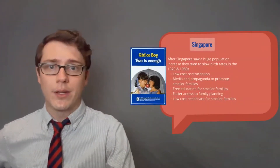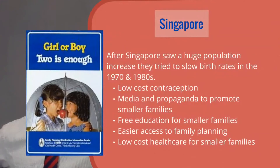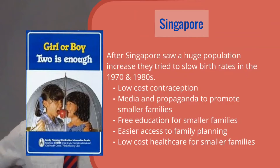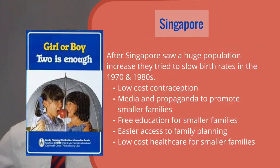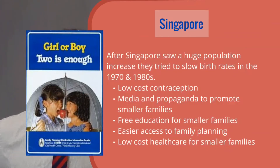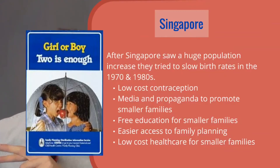Another example of anti-natalism was also in Singapore. Singapore went through the demographic transition model after industrialization in the 1950s and then saw that they were growing much faster than they wanted to. So in the 70s and 80s, they instituted a lot of anti-natalist policies. Once they successfully slowed down their fertility rate, they realized they actually wanted to bring it back up — and so now they take pro-natalist policies. Singapore is an example of a country that tried to slow down, was successful, and then flipped to encouraging more growth.